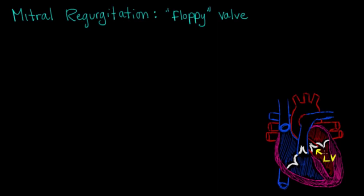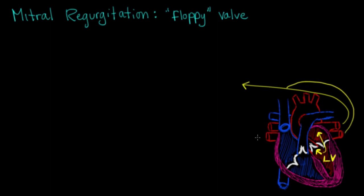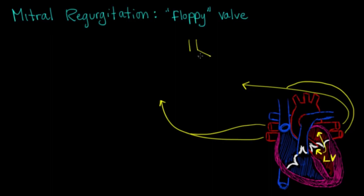But in mitral regurgitation, blood actually goes back into the left atrium. Blood can then back up from there into the pulmonary system. You'll see I'm drawing lines from the pulmonary veins that usually come from the lungs — blood is going to get backed up from the left atrium to these pulmonary veins and back to the lungs.